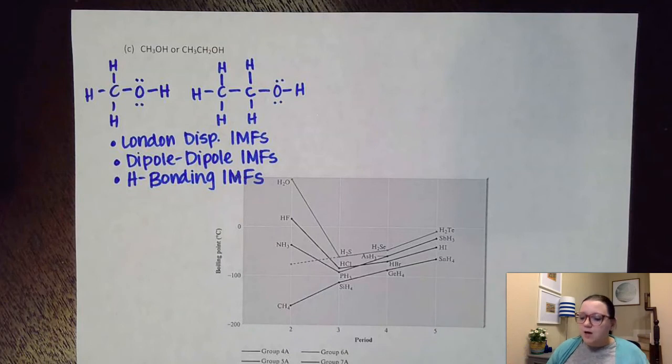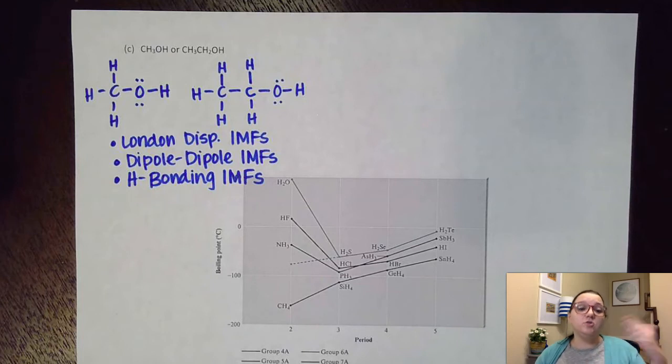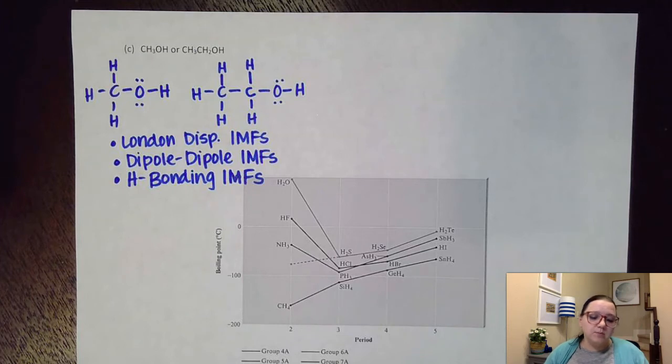So that's not really going to help me. So then the next thing I would do is consider my London dispersion forces. The two things we can consider there is that if these had the same formula, but maybe were just organized differently, I could check for surface area. Remember, longer chains have more surface area, and so those have more polarizability versus less chains, more branching occurring, would have less surface area and less polarizability.